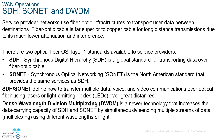ISPs love to use SONET and SDH when communicating between different ISPs, because that's where you're aggregating all the connections — for example, sending data from the Northeast to the Southeast. Enterprise networks also use SONET and SDH for their WAN connections. DWDM is a newer technology that increases the data-carrying capacity of SONET and SDH by simultaneously sending multiple streams of data using different wavelengths of light.